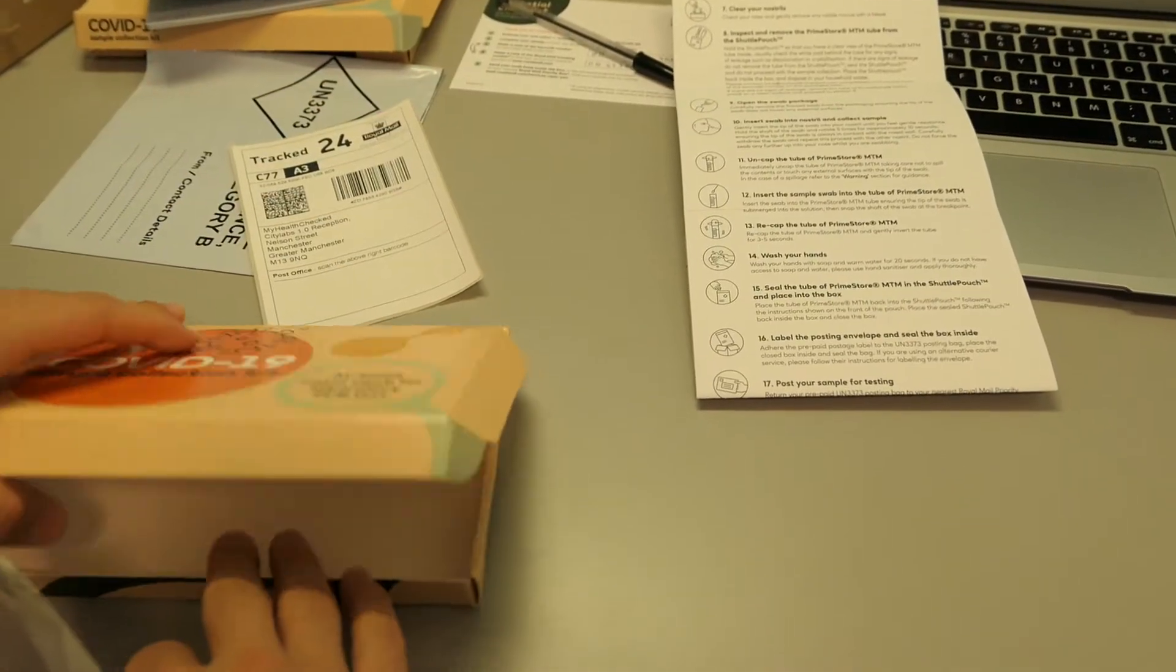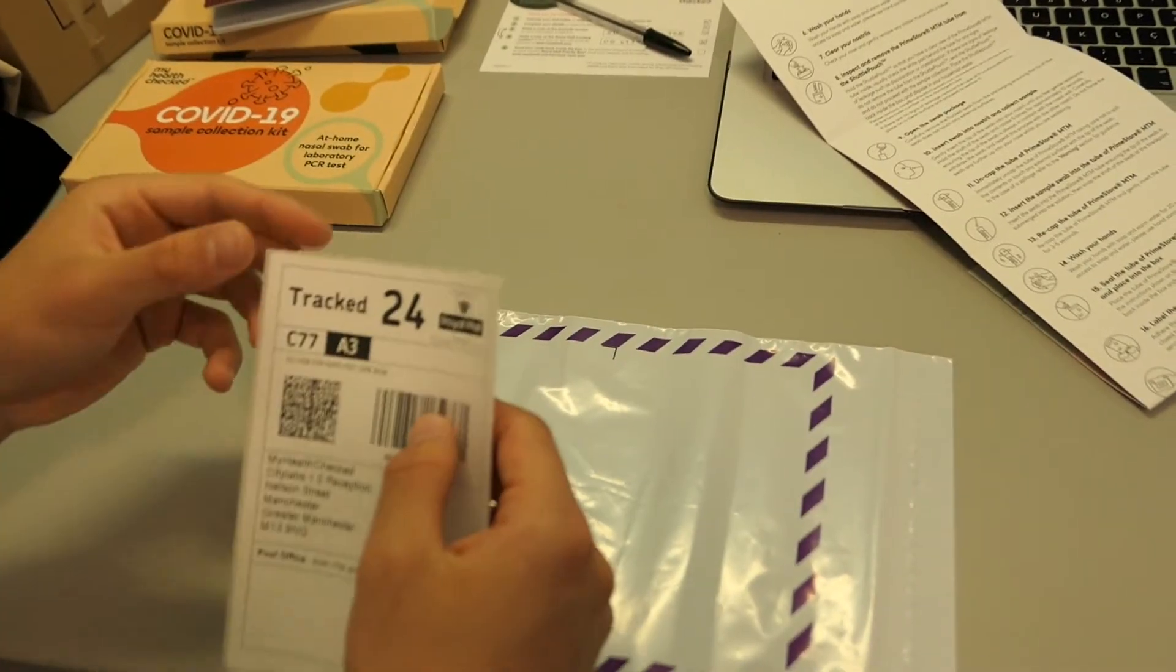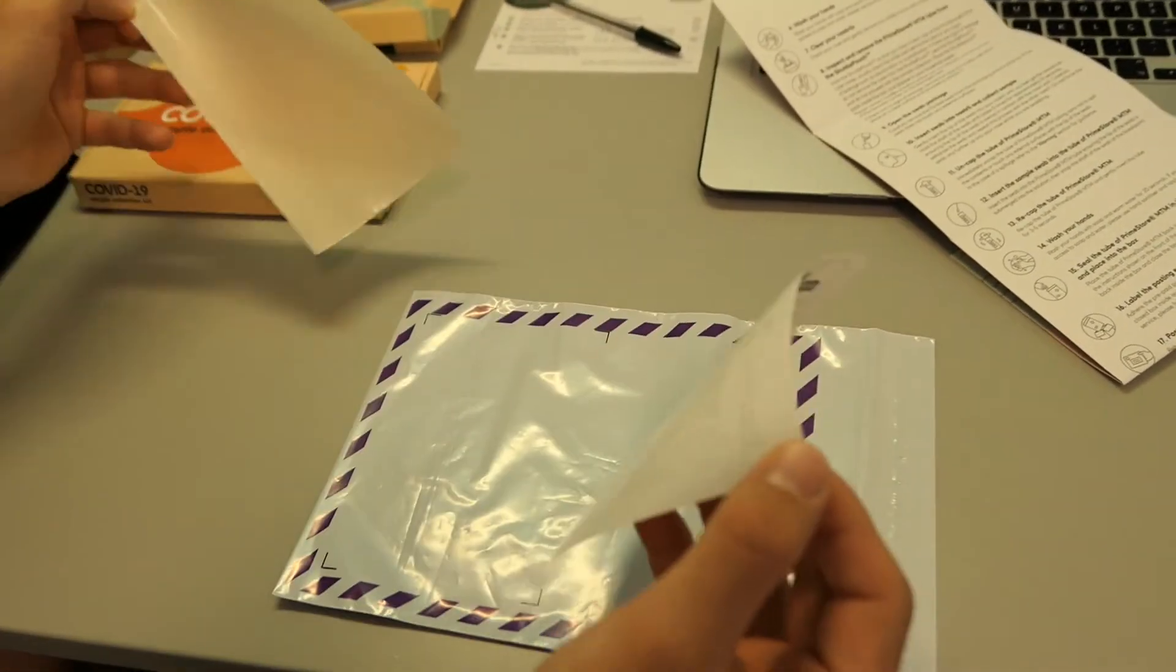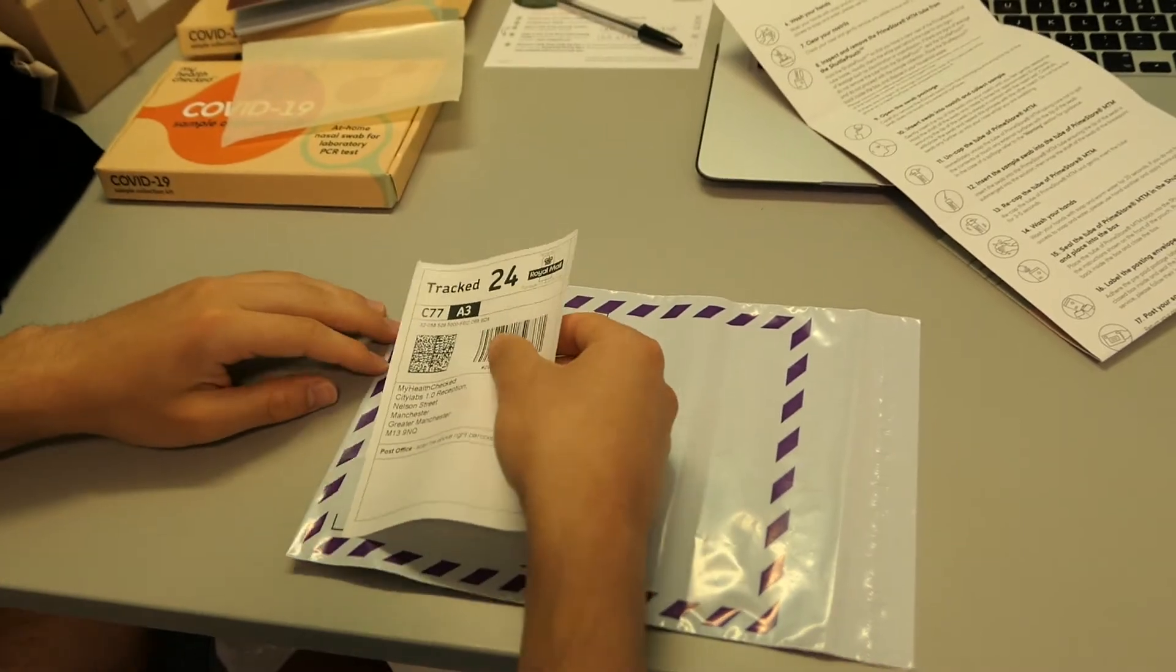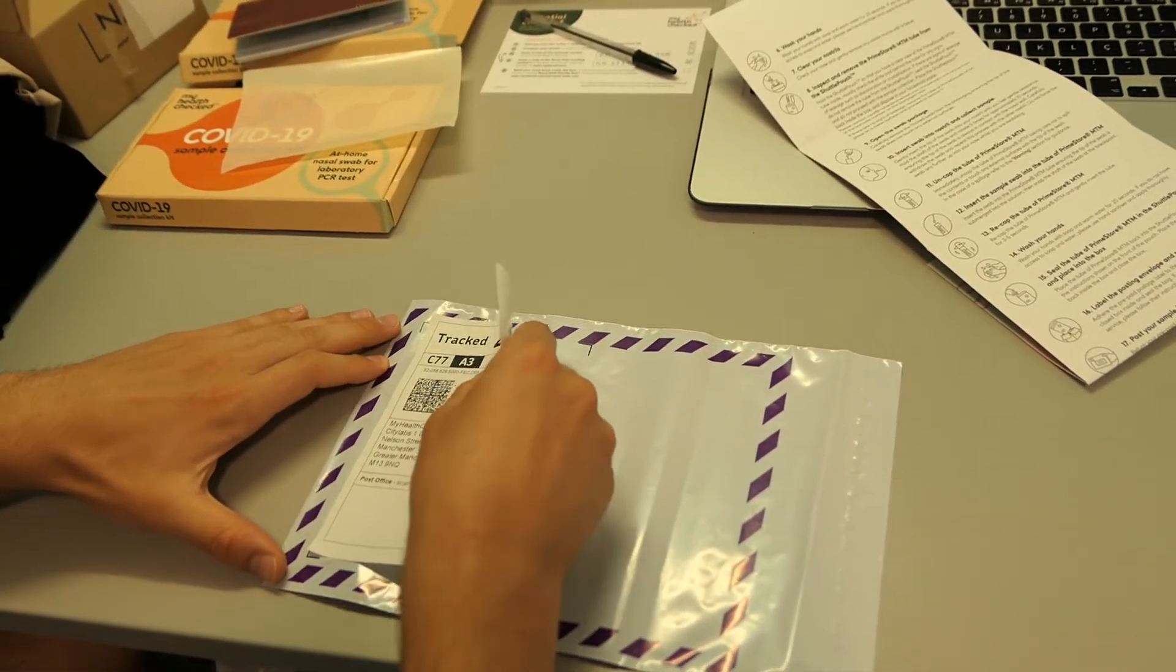Place the sealed shuttle pouch back inside the box and close it. Adhere the prepaid postage label to the UN-3373 posting bag. Place the closed box inside and seal the bag.